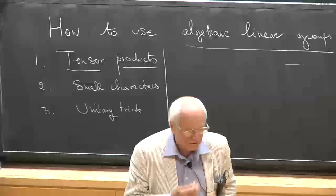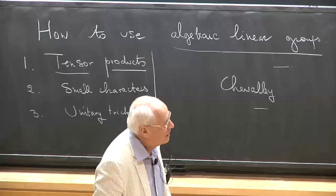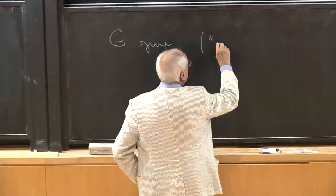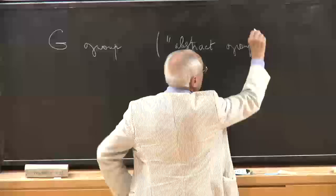Starting with tensor products. Let me recall a few definitions. We have a group G — it is a group with no structure at all. It is what in the literature is called, very curiously, an abstract group. The idea being that quantum groups and formal groups are concrete, but this one is very abstract.